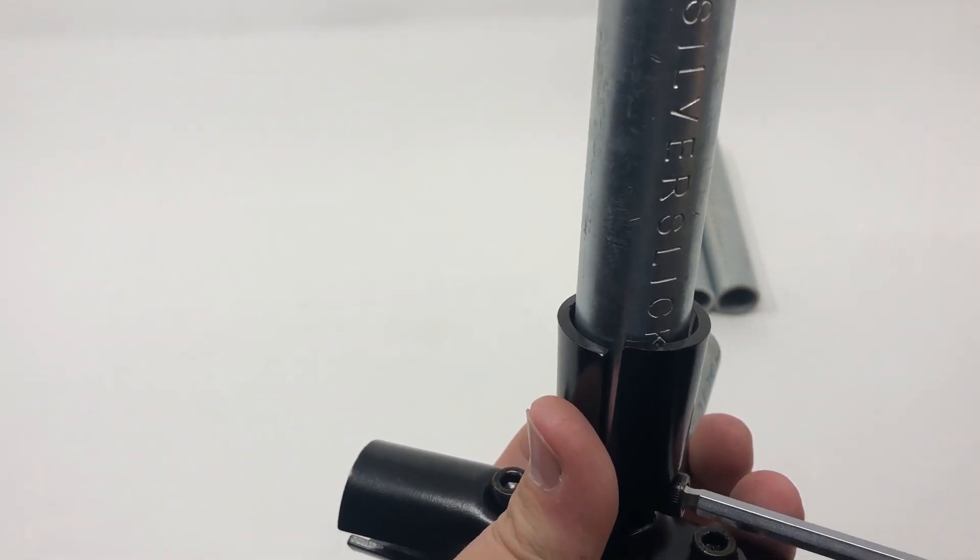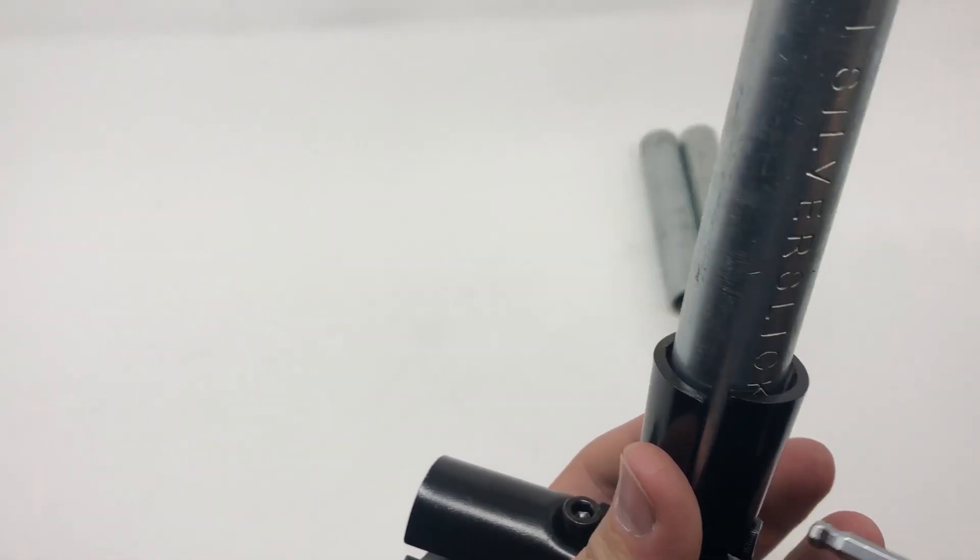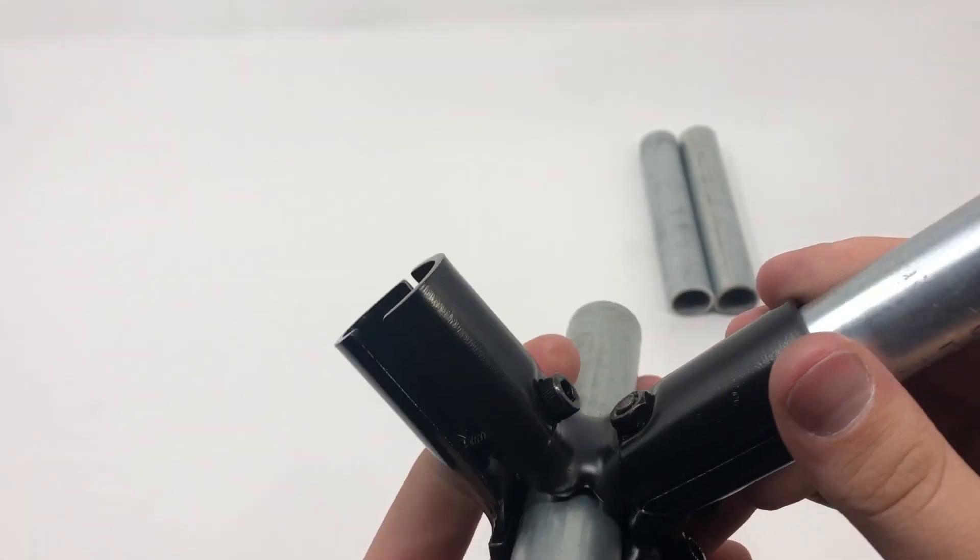When tightening the bolt, the connectors clamp down on the conduit, allowing for an easy connection that requires no drilling.